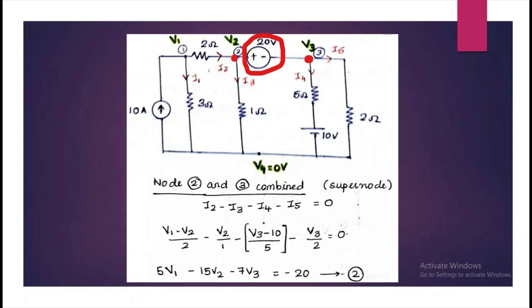Since there is a voltage source common to both node 2 and node 3, it is a super node. And we have to write the KCL equation of node 2 and node 3 combined. So the equation would be I2 minus I3 minus I4 minus I5. So I2 is V1 minus V2 divided by the resistance 2 ohm minus I3 is V2 minus V4 which is equal to zero, so it would be just V2 divided by 1 ohm minus I4 is V3 minus 10 divided by 5 ohm and I5 is V3 divided by 2 ohm. So again rearrange to get equation number 2.